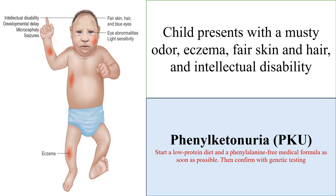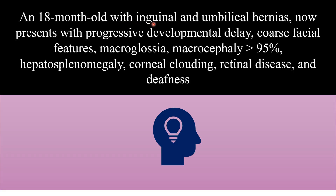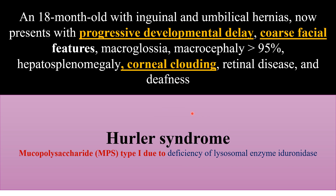An 18-month-old with inguinal and umbilical hernias now presents with progressive developmental delay, coarse facial features, macroglossia, macrocephaly, hepatosplenomegaly, corneal clouding, retinal disease, and deafness. This is Hurler disease, a mucopolysaccharidosis type 1 due to deficiency of the lysosomal enzyme alpha-L-iduronidase. Key words: progressive developmental delay or developmental regression, coarse facial features, and corneal clouding affecting the eye.